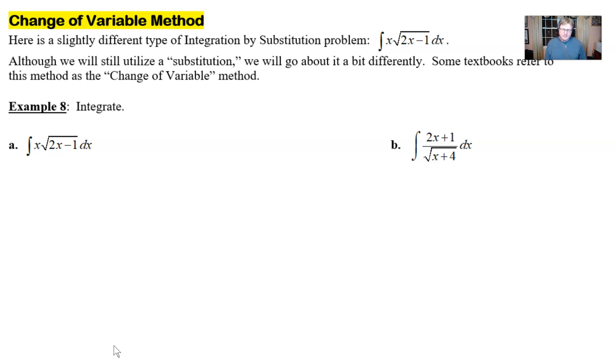So let's take a look and you'll see what I mean. For our example, we have a slightly different type of integration sub problem. We have the integration of x times the square root of 2x minus 1 with respect to x. Now although it has this u substitution that we're going to use, there's a bit of a problem while we try to incorporate it.